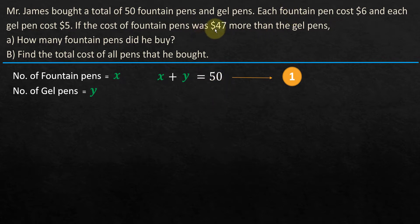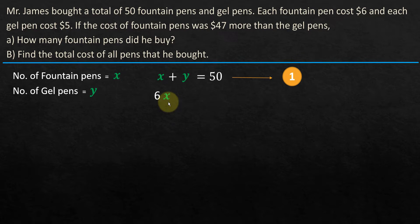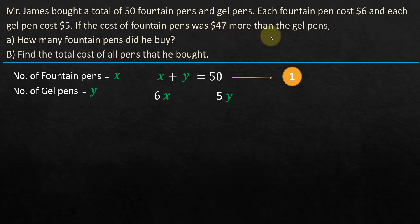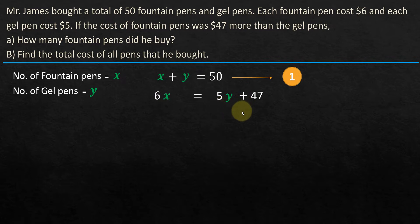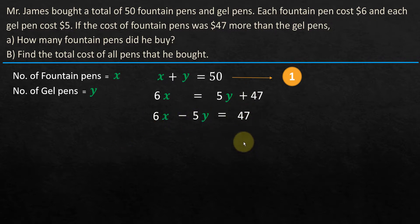Now, the difference in cost is $47. $6 is the cost of one fountain pen and x is the number of fountain pens, so 6x gives you the total cost of all fountain pens. Similarly, 5y gives you the total cost of all gel pens. The cost of fountain pens was $47 more than the gel pens, meaning 6x is more than 5y by $47. So we can write: 5y plus 47 equals 6x, which rearranges to 6x minus 5y equals 47. That's our second equation.